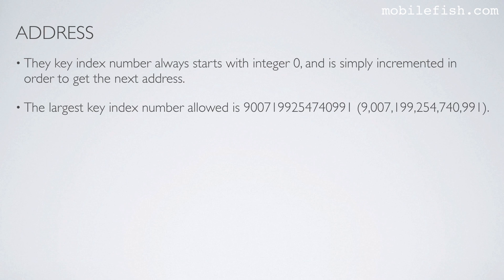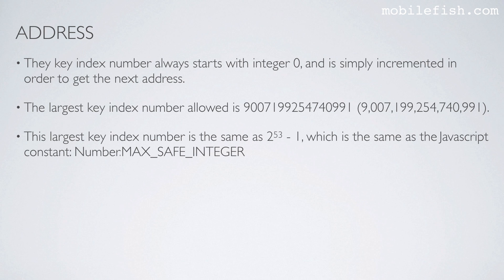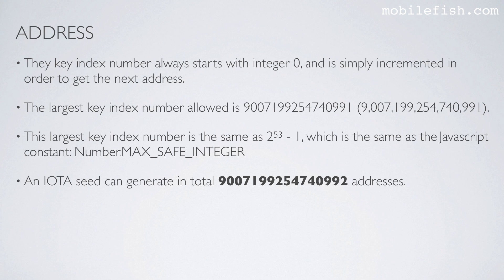The largest key index number allowed is 9,007,199,254,740,991. This largest key index number is the same as 2 to the power of 53 minus 1, which is the same as the JavaScript Number constant MAX_SAFE_INTEGER. An IOTA seed can generate in total 9,007,199,254,740,992 addresses.